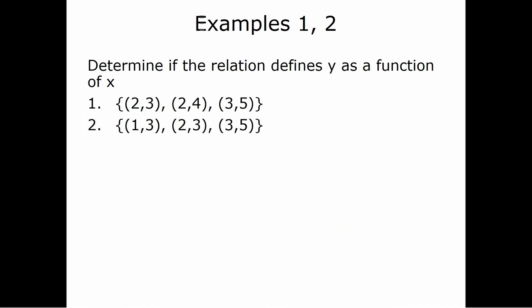Now let's look at some actual problems. When we have relations defined as sets of ordered pairs, we just look at the x values. Here the x values are 2, 2, 3 — the x value 2 is repeated, so this is not a function.